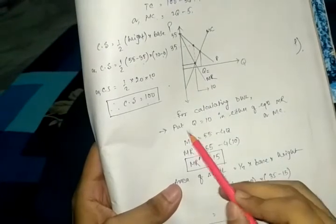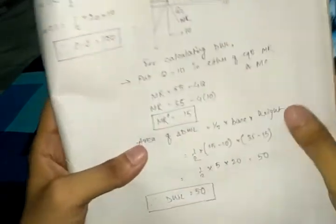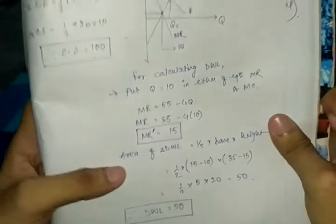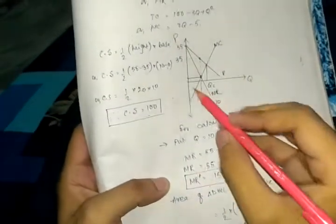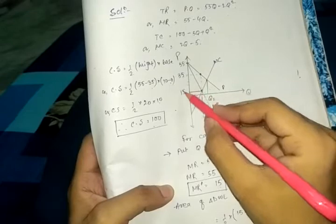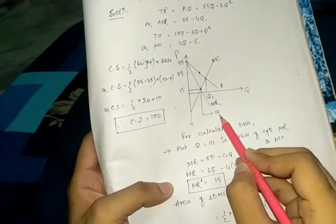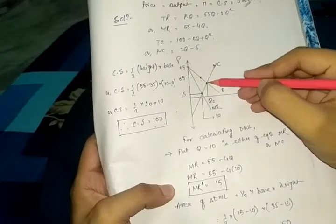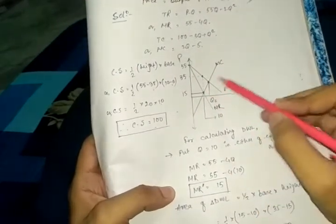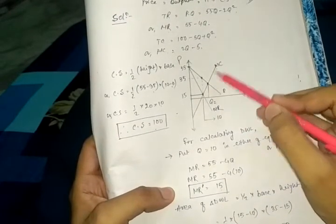To find that point's value, put Q = 20 in either the MR or MC equation. Putting it in MR: 55 − 4Q gives us MR' = 15. This point — call it MC or MR' — has a value of 15. So now I know the height. For the base, I know Q = 10 at one end. At the other end, the intersection is between the demand curve P and MC, i.e., P equals MC.